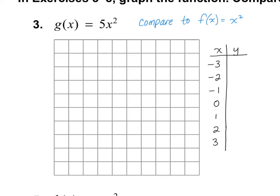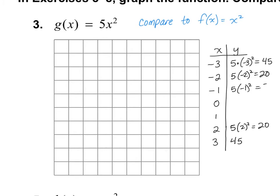We're going to plug values into 5x squared. If we plug in negative 3, it's 5 times negative 3 squared, which is 5 times 9, giving us 45. When we plug in positive 3, we also get 45. Negative 2 gives us 5 times 4, which is 20 — same as positive 2. Negative 1 gives us 5, same as positive 1.